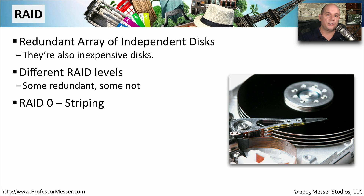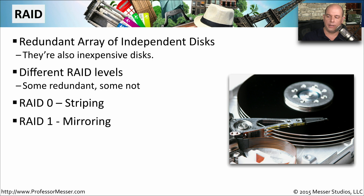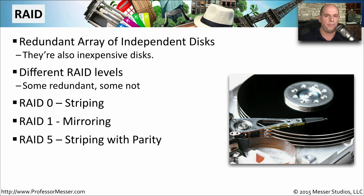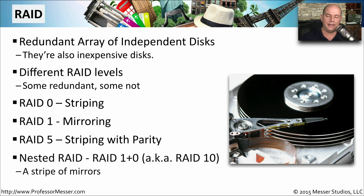The RAID formats we'll look at in this video are some of the most popular. RAID 0 is striping. RAID 1 is also called mirroring. RAID 5 is striping with parity. And finally, we'll look at a nested RAID, which is RAID 10 or RAID 1 plus 0, which is effectively a stripe of mirror drives.